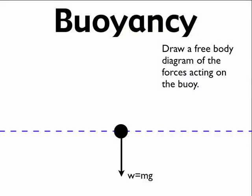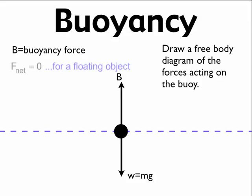With my free-body diagram, I know I have a force going down equal to the weight of the buoy floating in the water, and then I also have a force going up called the buoyant force — we abbreviate that with a capital B. Just like we might use W for weight, we'll use capital B for buoyant force. It's floating, so it's not accelerating up or down, meaning net force equals zero. So summing forces in the y direction: zero equals B minus mg, which means the buoyant force equals mg.